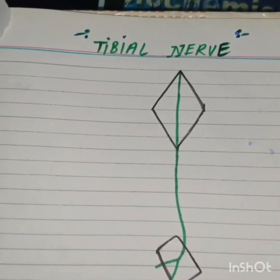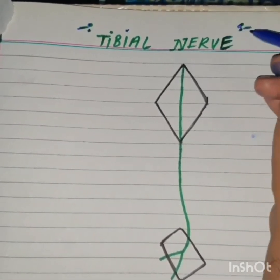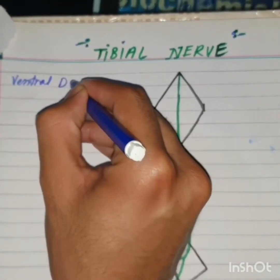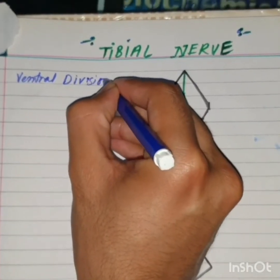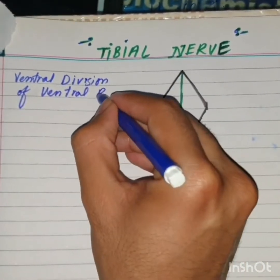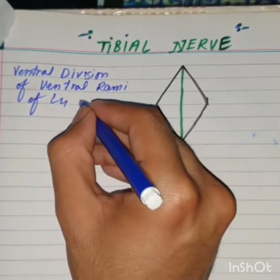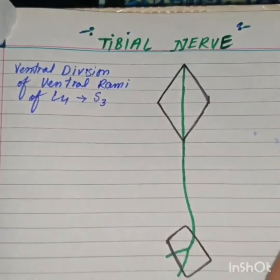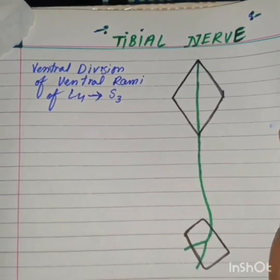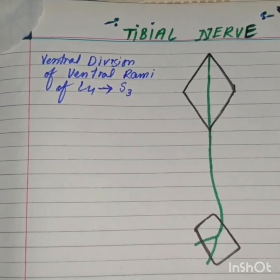The topic of our today's discussion is the tibial nerve. The tibial nerve has the root value of the ventral division of ventral rami of L4 to S3 segments of the spinal cord. This is the root value of the tibial nerve, and it is the nerve of the posterior compartment, or flexor compartment, of the leg.